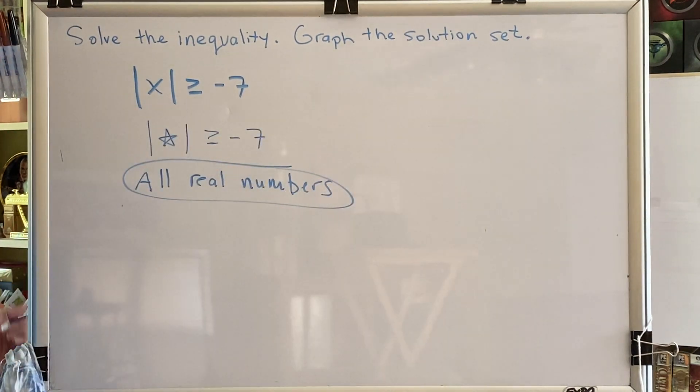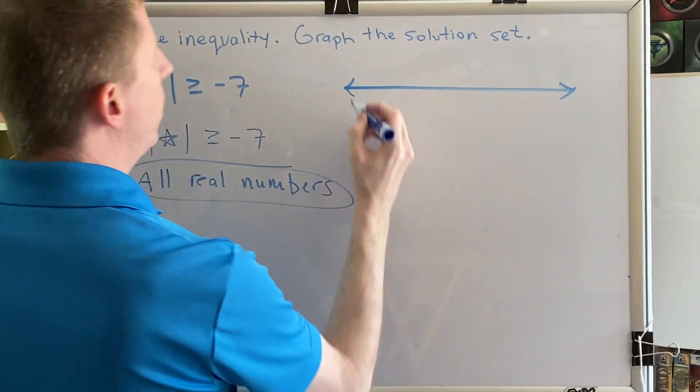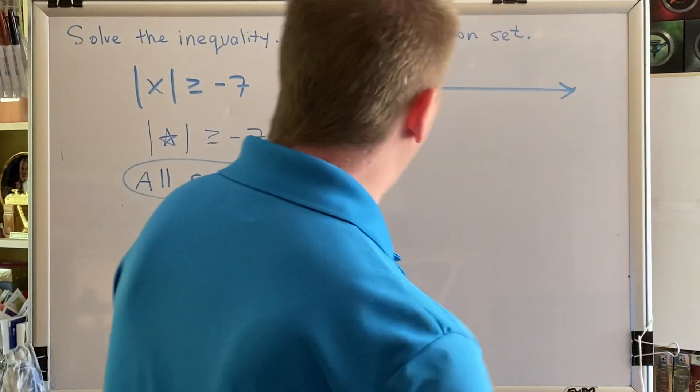Let's graph the solution set. We're going to create a number line, and we're going to shade the entire number line.